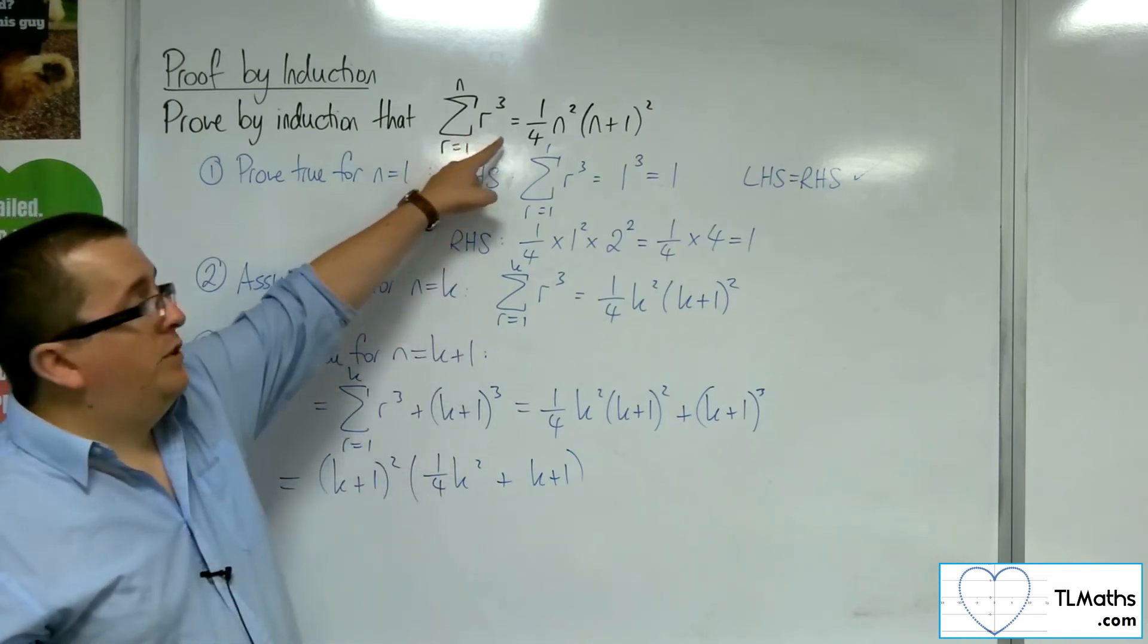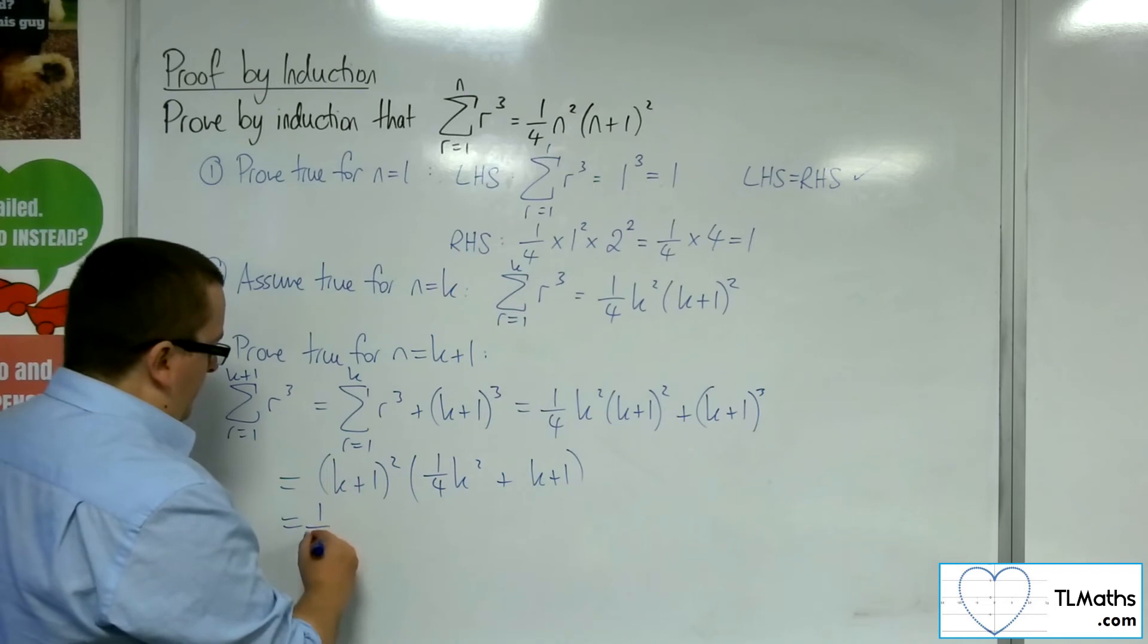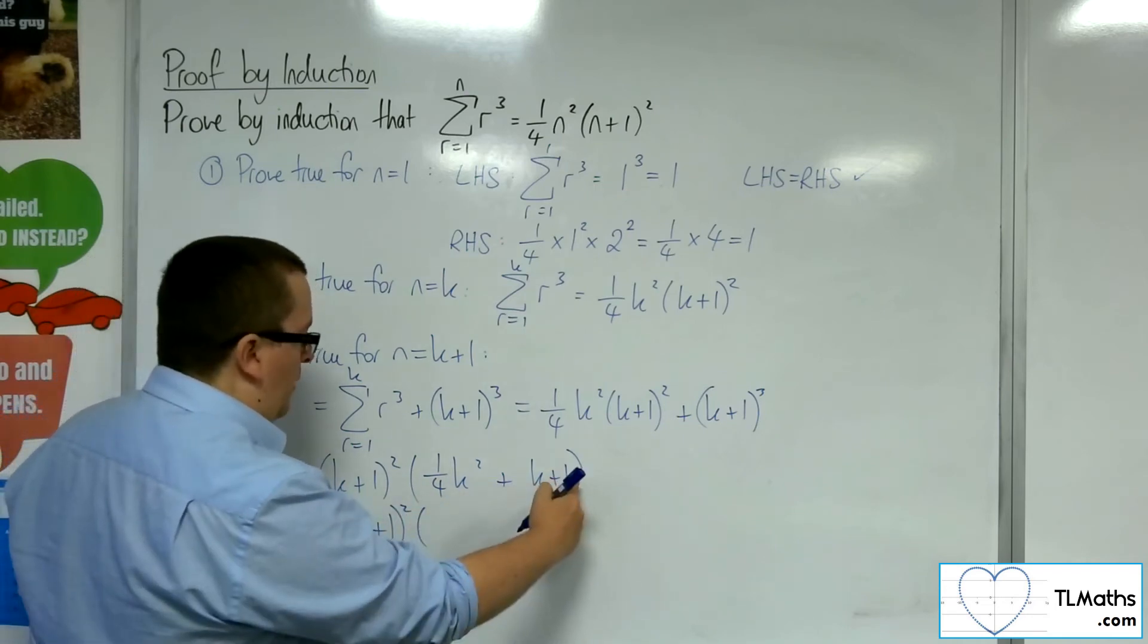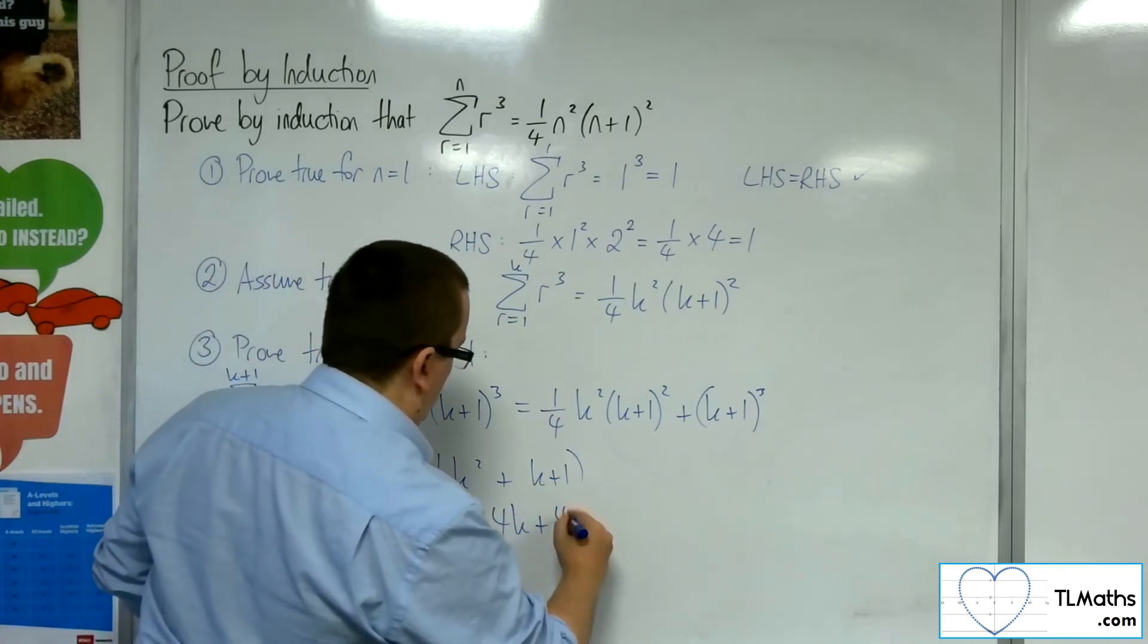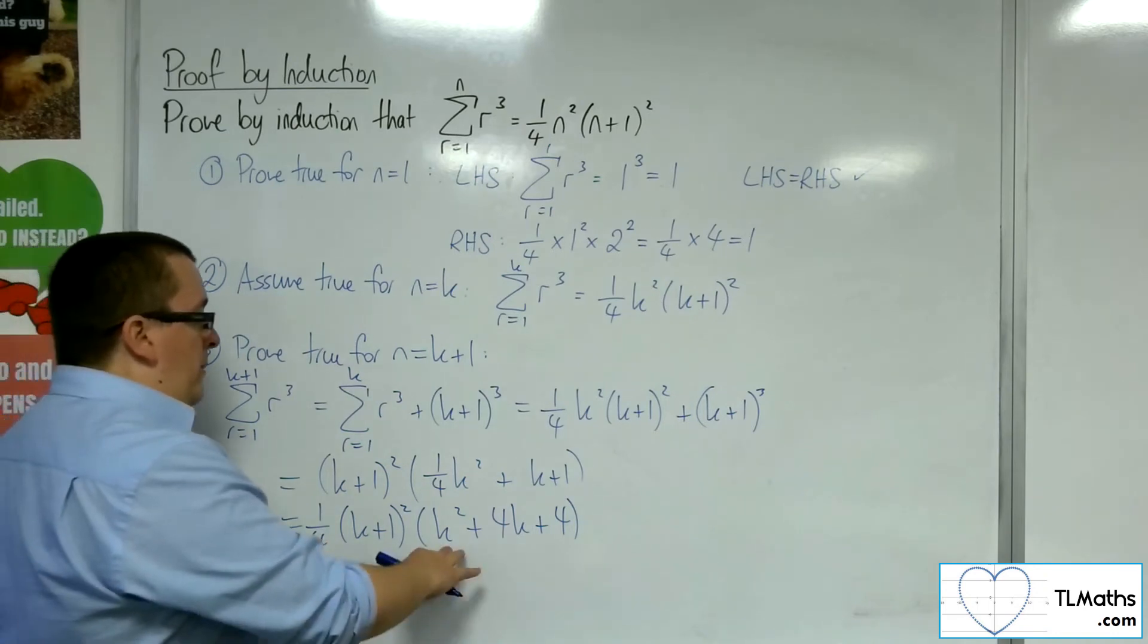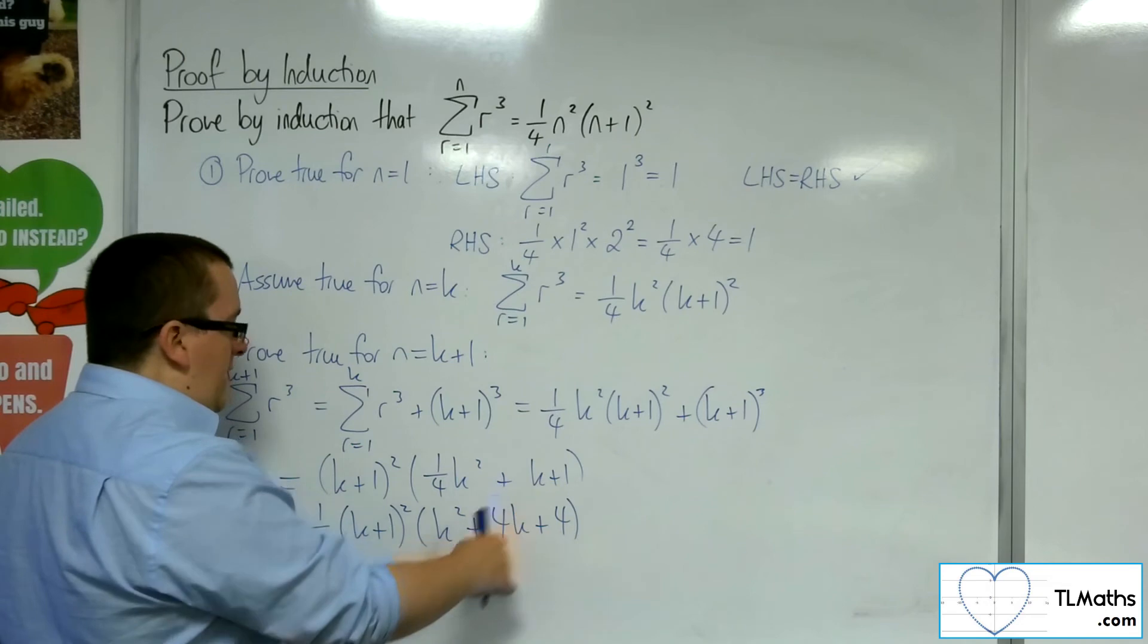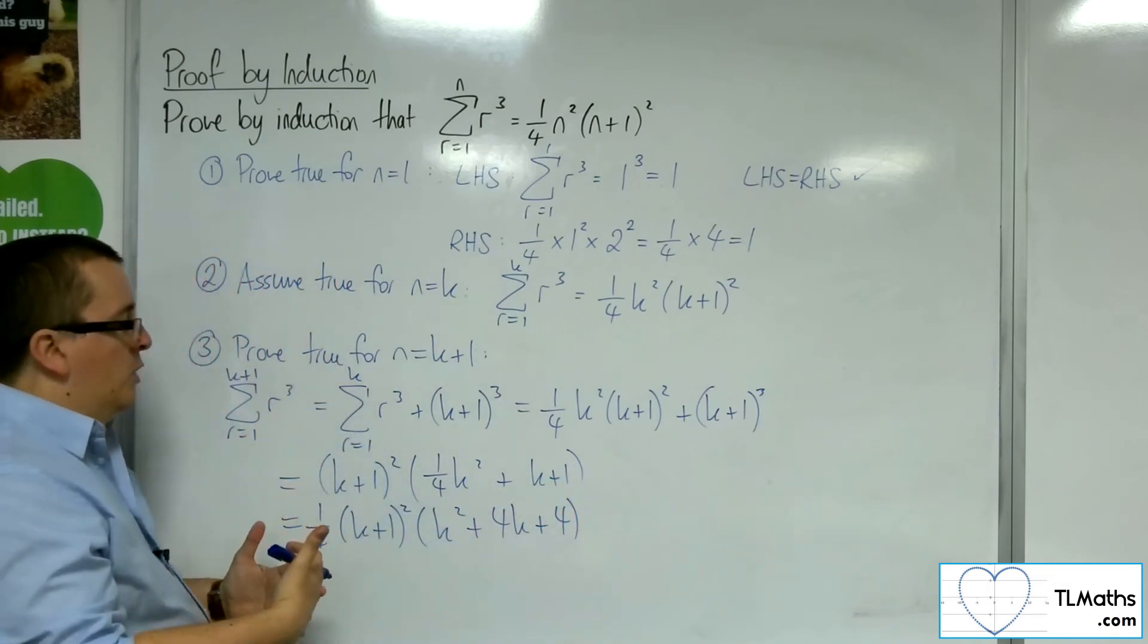Now, I know I want to end up with a quarter outside. So to pull the quarter outside, I must multiply everything in that bracket by 4. That is in order for it to work backwards. 1 quarter times this term gets me that term. 1 quarter times 4k gets me the k. And 1 quarter times 4 gets me the 1. So they are equivalent.